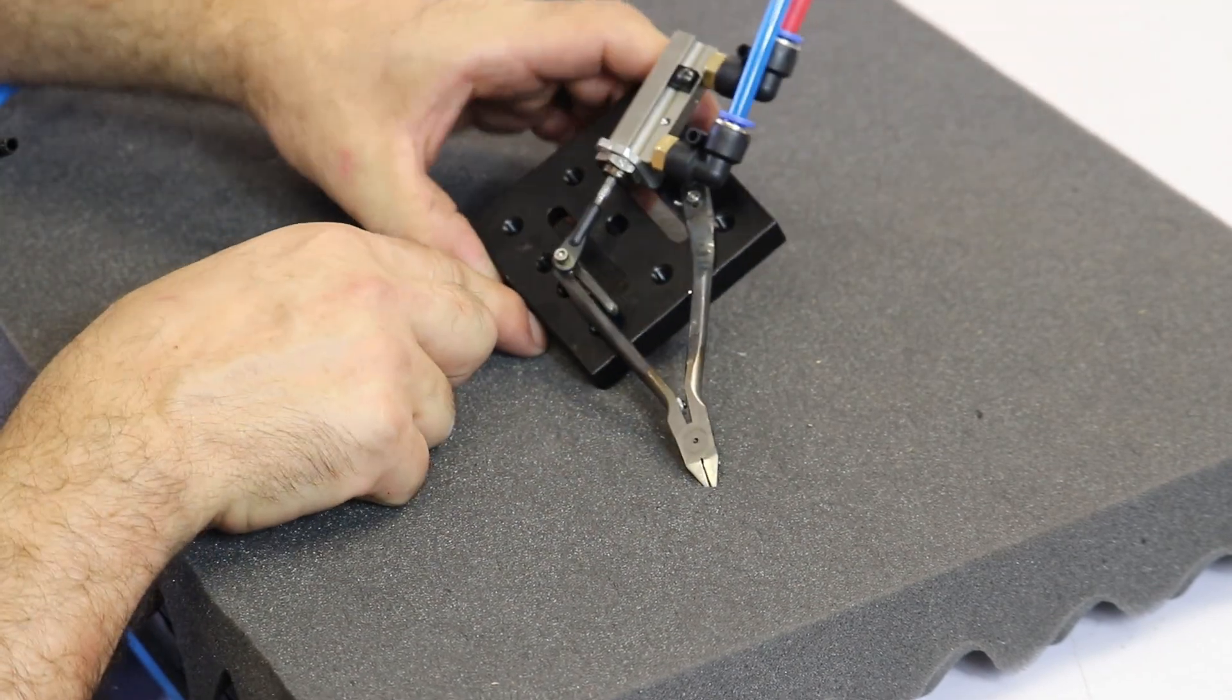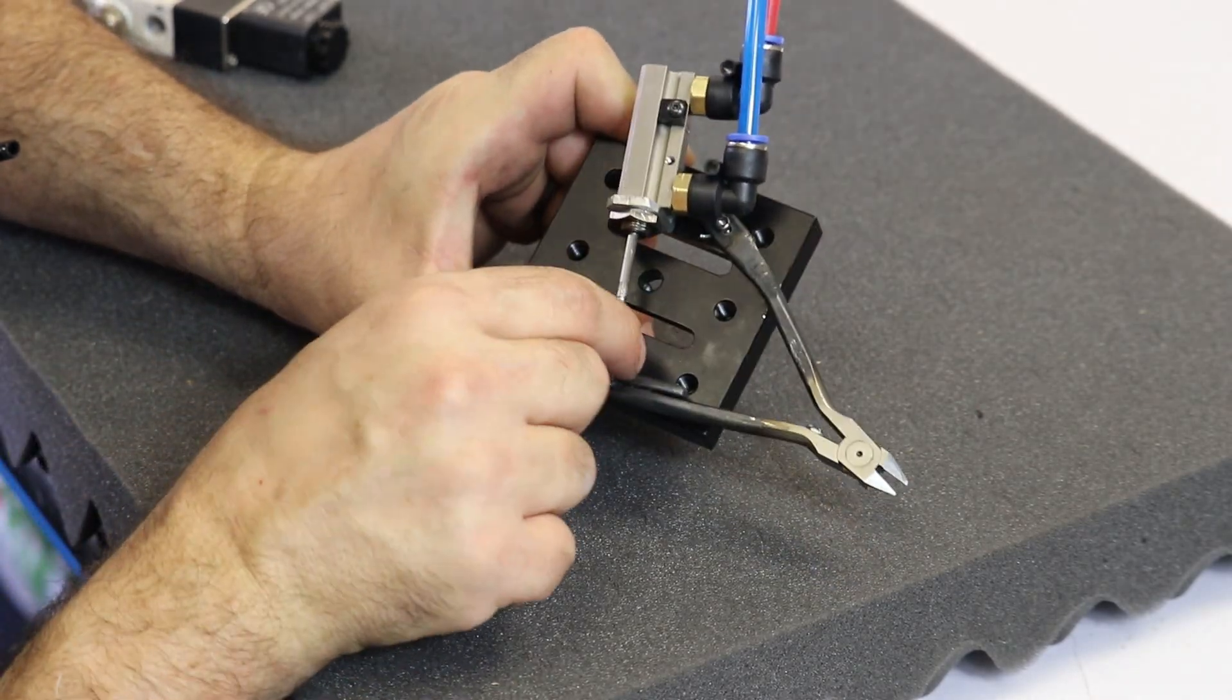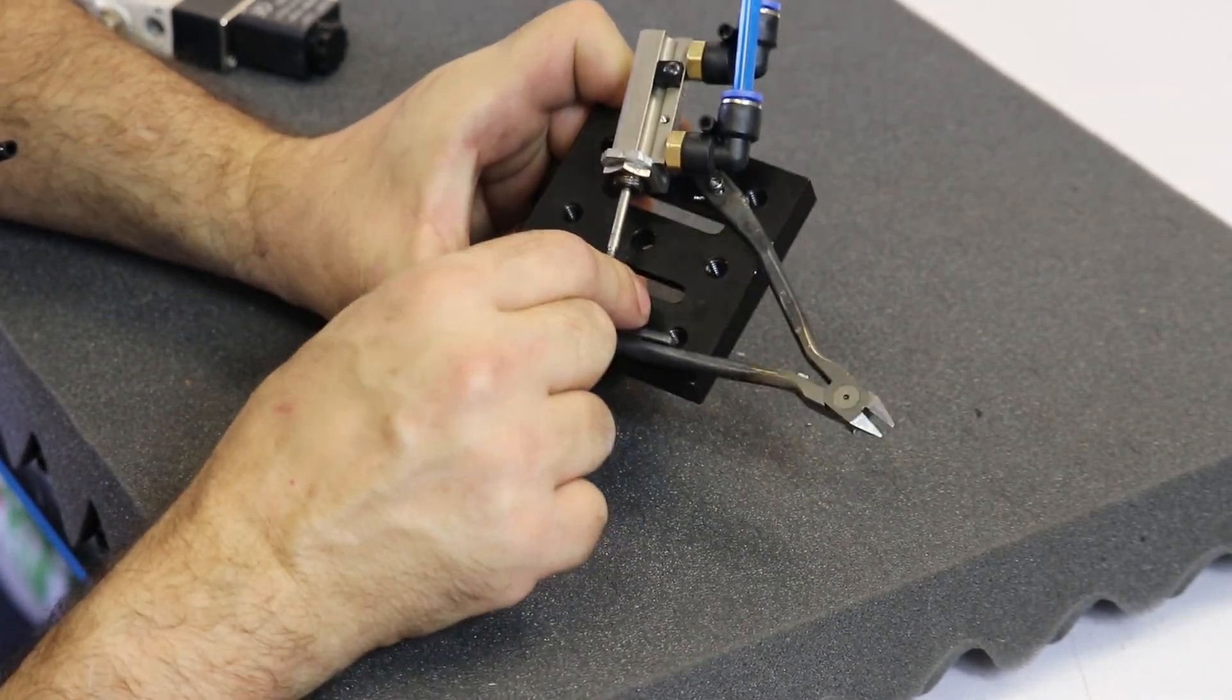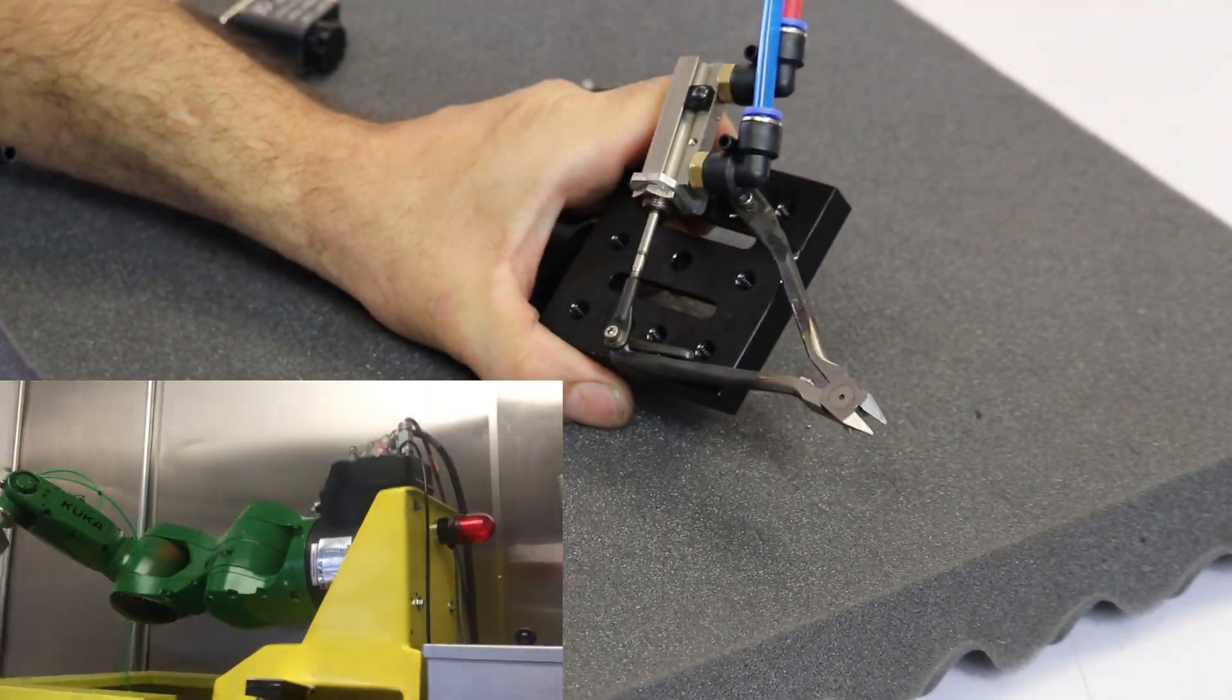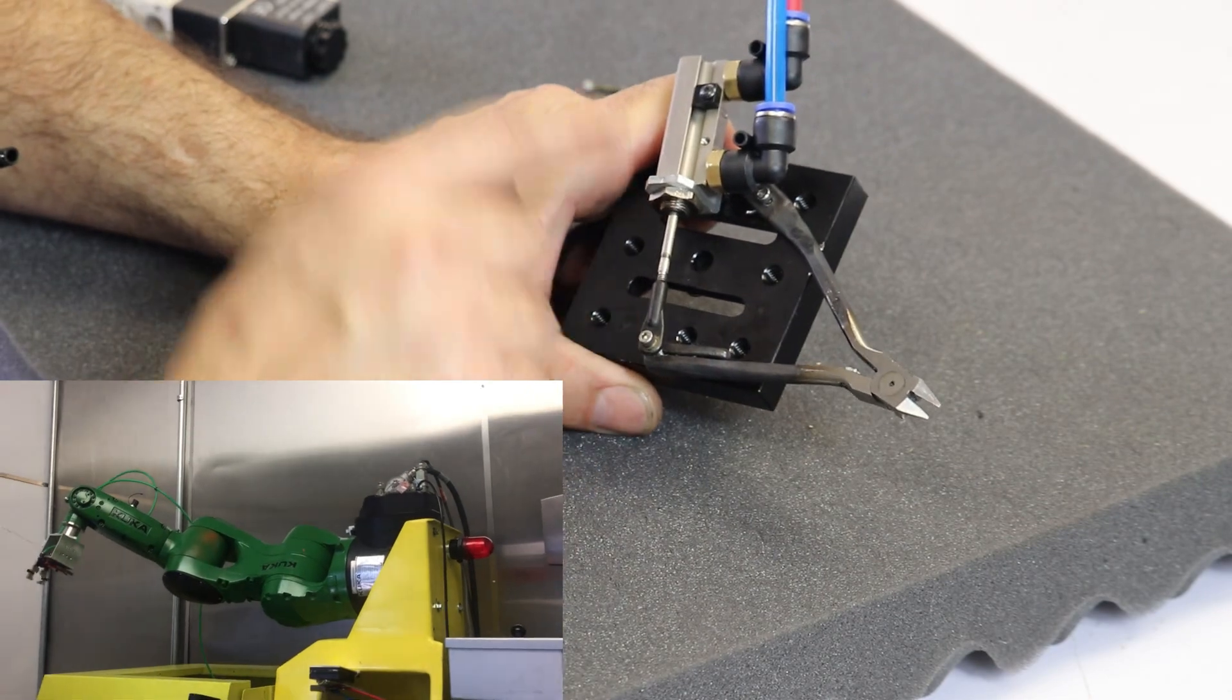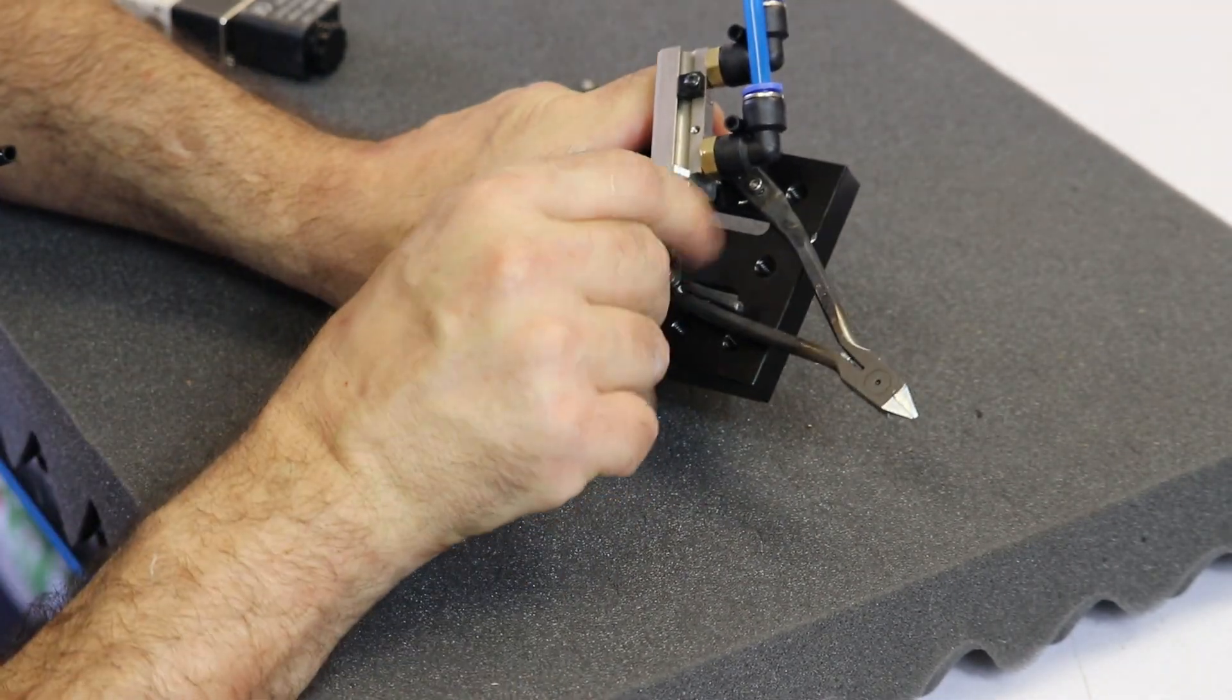We've got this little air cylinder right here, which actuates the cutter to clip parts. The robot will pull a part out of the mold, bring it over to this clipper which is mounted to the molding machine, and then this air cylinder, which is driven by the robot controller, will clip the part.